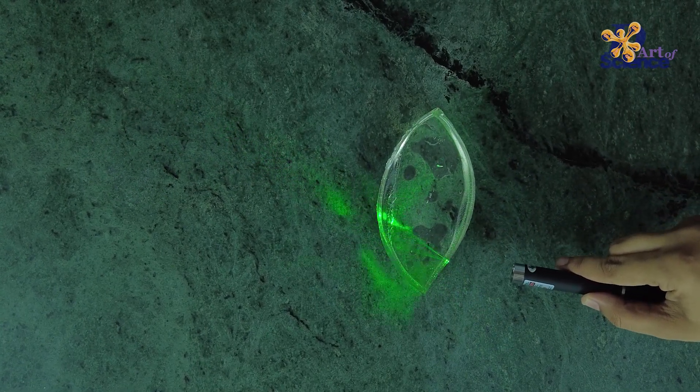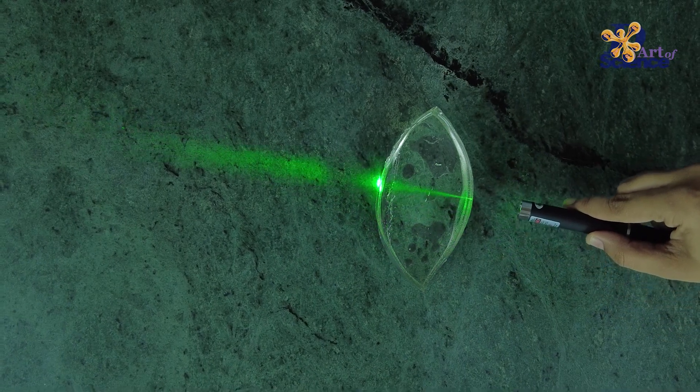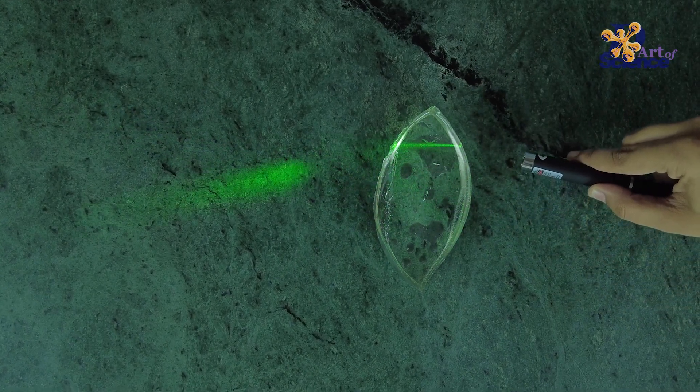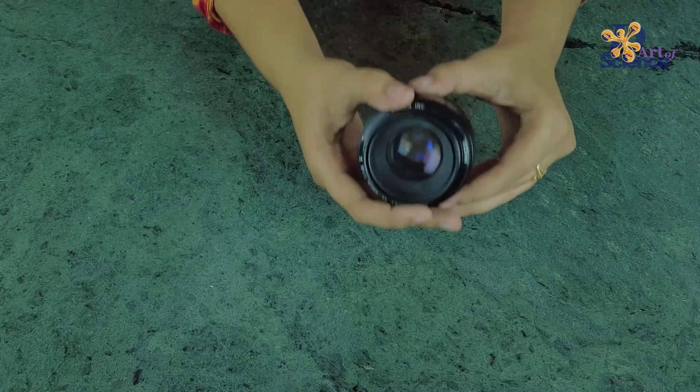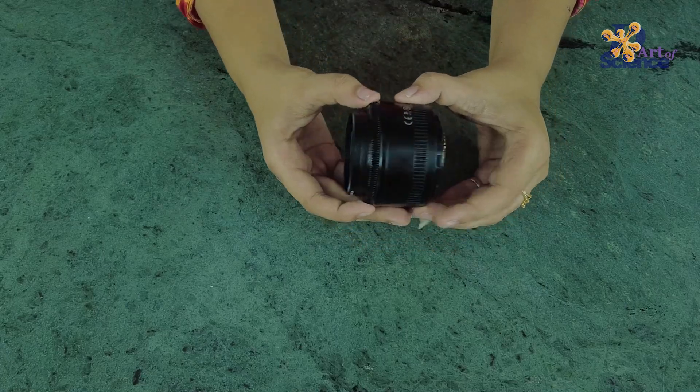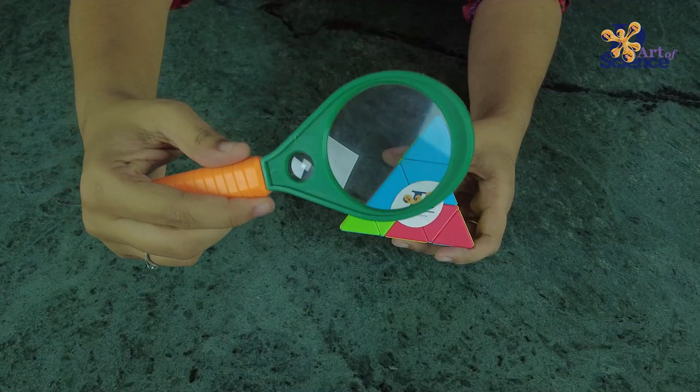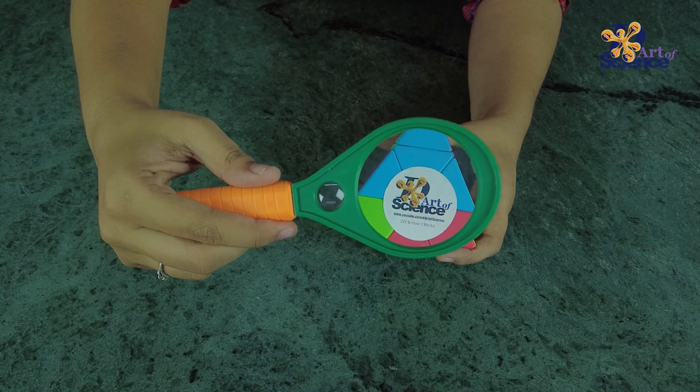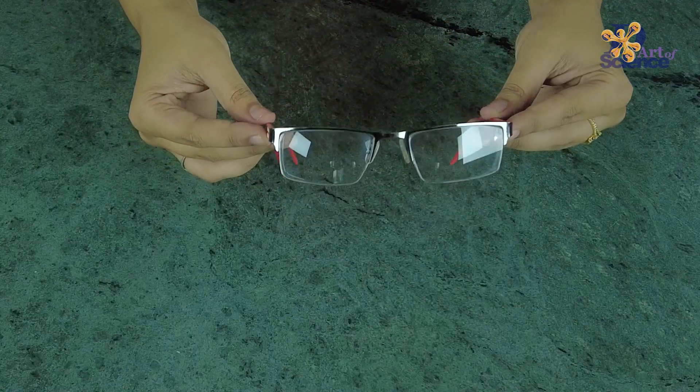Did you know that our eyes also have a convex lens? Convex lenses are used in cameras, magnifying glasses, and also in eyeglasses.